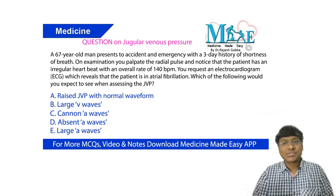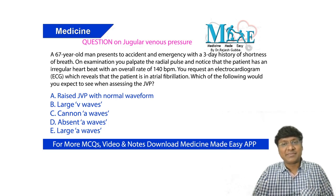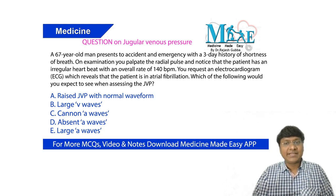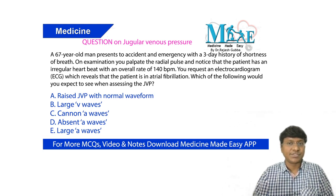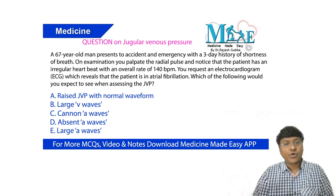As part of today's Daily Dose, the clinical question is as follows. A 67-year-old man presents to the emergency department with a three-day history of shortness of breath. On examination, you palpate the radial pulse and notice an irregular heartbeat with an overall rate of 140 beats per minute. An ECG reveals that the patient is in atrial fibrillation. Which of the following would you expect to see when assessing the JVP? Options: raised JVP with normal waveform; large V waves; cannon A waves; absent A waves; or large A waves.